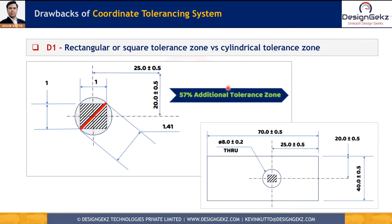The first drawback of the coordinate tolerancing system is the rectangular or square tolerance zone. As shown in the example, we have a block with a drilled hole of diameter 8 ±0.2 tolerance. This hole is located by 25 ±0.5 and 20 ±0.5, which means we get a square tolerance zone of 1 by 1. If we calculate the hypotenuse using the Pythagorean principle — square root of 1² + 1² — it gives us 1.41, which rounds to 1.4.